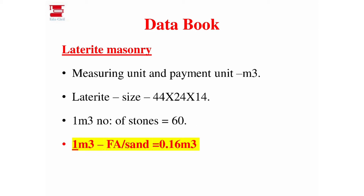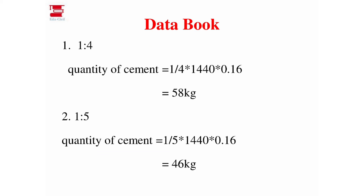The minimum size is 1440 into 0.40 and 0.3. For laterite stones, the number is 60. Laterite masonry — the quantity of cement for 1 m³ of work gives a fine aggregate of 0.16 m³. The key values are: PCC 0.95, RCC 0.9, brick masonry 0.2, and laterite masonry 0.16.